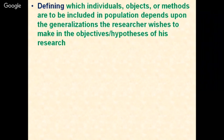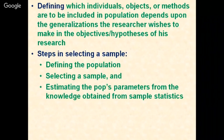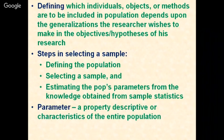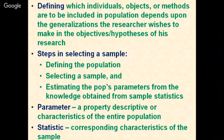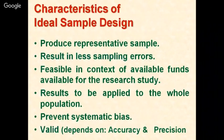Defining which individuals, objects, or methods are to be included in the population depends upon the generalizations the researcher wishes to make in the hypothesis or objectives. The steps involved in selecting a sample are: define the population, select a sample, and eliminate the population parameter from the knowledge obtained from the sample statistics. The parameter is a property descriptive of the entire population, whereas the statistic is the corresponding characteristic of the sample.